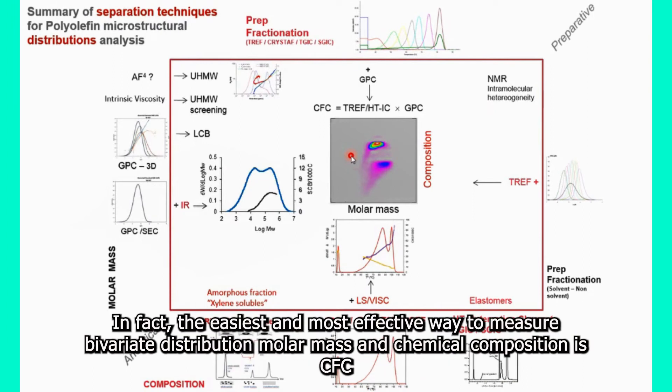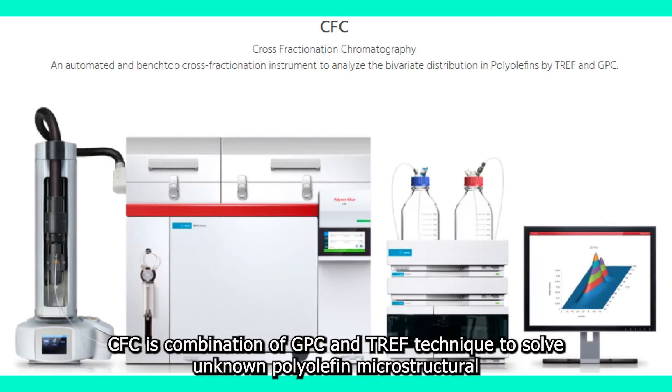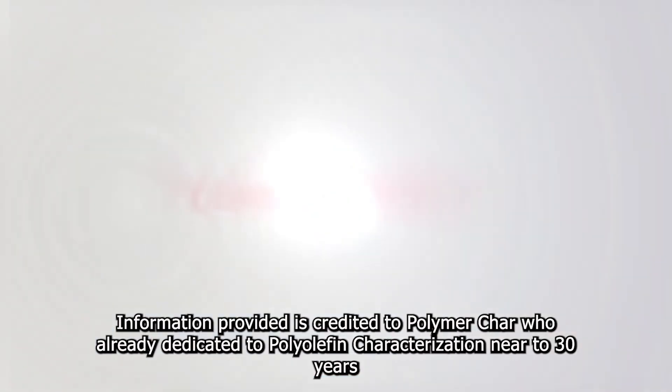In fact, the easiest and most effective way to measure bivariate distribution of molar mass and chemical composition is CFC. CFC is a combination of GPC and TREF technique to solve unknown polyolefin microstructure. Information provided is credited to Polymica, who has dedicated nearly 30 years to polyolefin characterization.